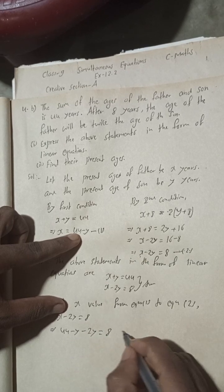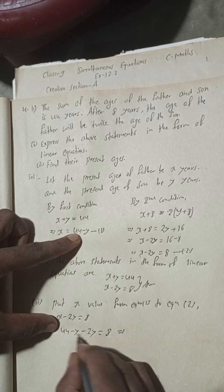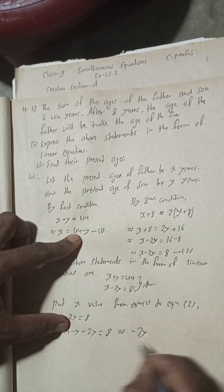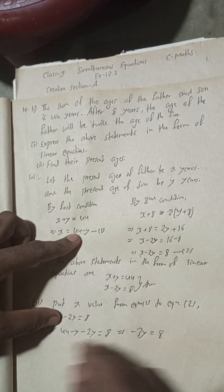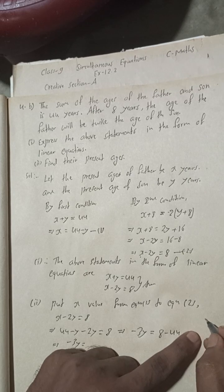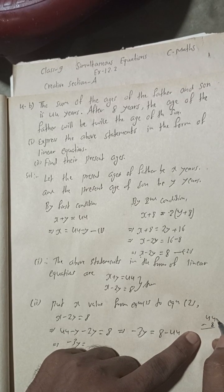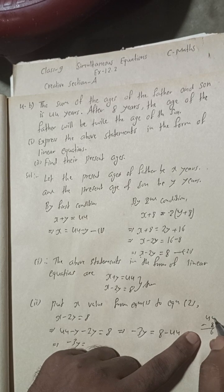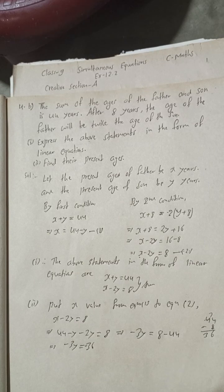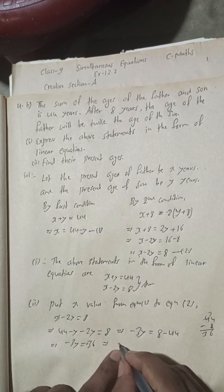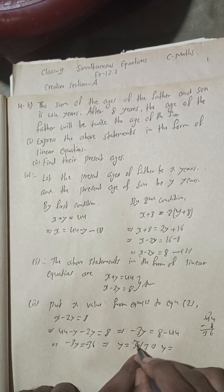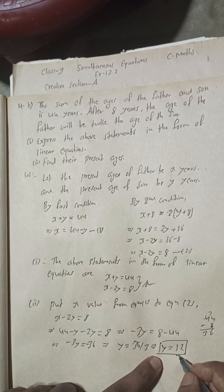So substituting: 44 minus Y minus 2Y is equal to 8. This gives minus Y minus 2Y equals minus 3Y, because the signs are added. So minus 3Y is equal to 8 minus 44, which is minus 36. The minus and minus cancel, so Y is equal to 36 divided by 3, which gives Y equal to 12. So the age of the son is 12 years.